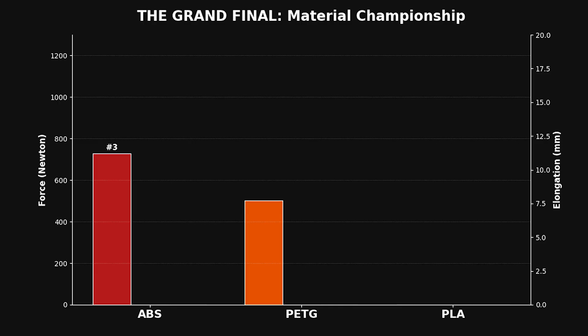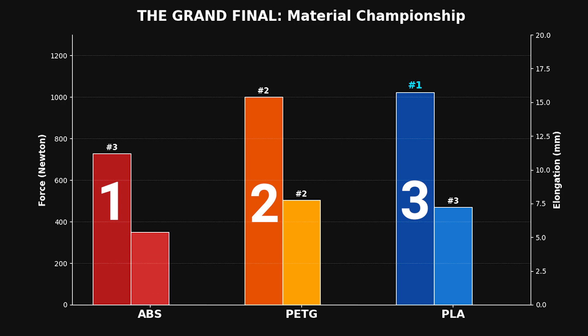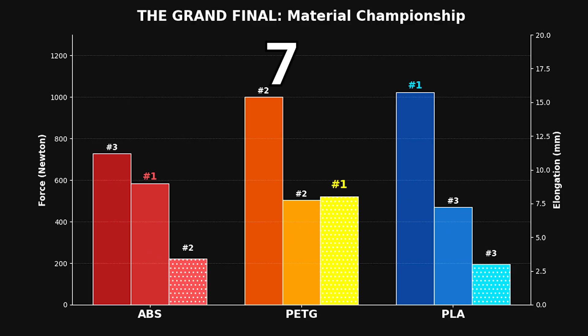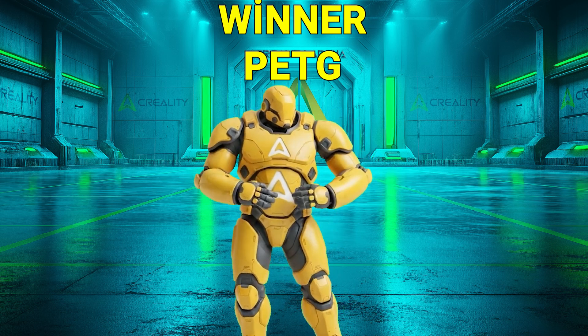On the scorecards, PLA wins peak force, ABS wins sustained force, and PETG wins elongation. Using a 3-2-1 point system, PETG ends up with 7 points, ABS with 6, and PLA with 5. The winner of this round, PETG.